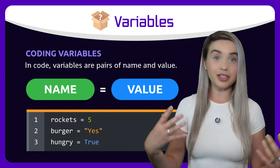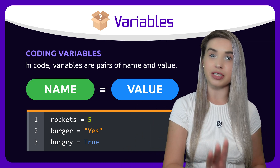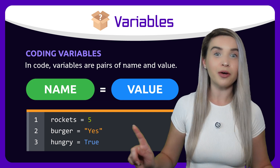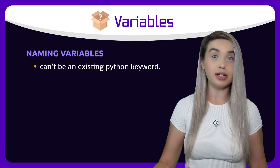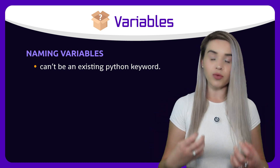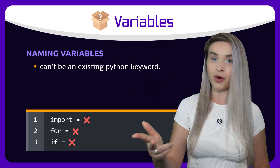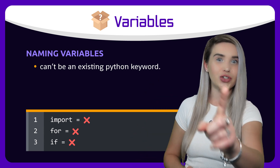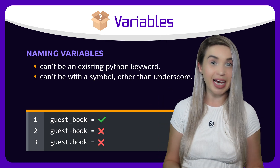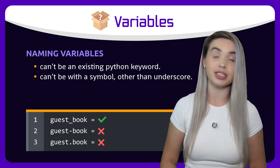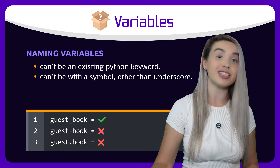But we can't just use any kind of name. There are certain words and characters that we are not allowed to use when naming variables. For example, if there's a keyword that already exists in Python, like import, if, for, and so on, then don't try to use it. Also, the only special character we are allowed to use is an underscore — so no dashes, no dots, and so on.